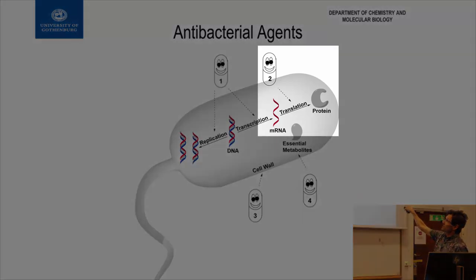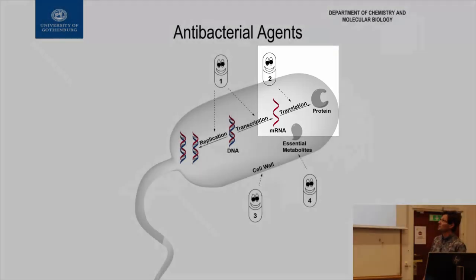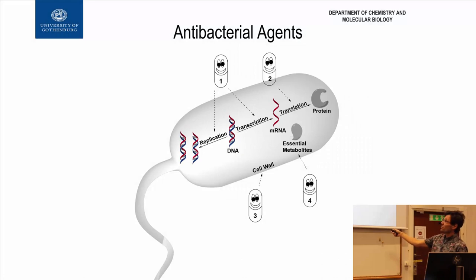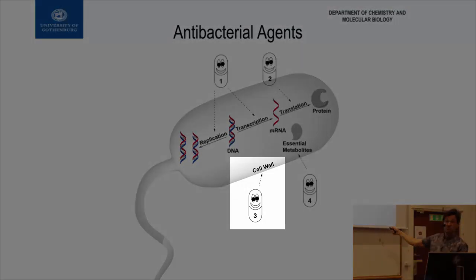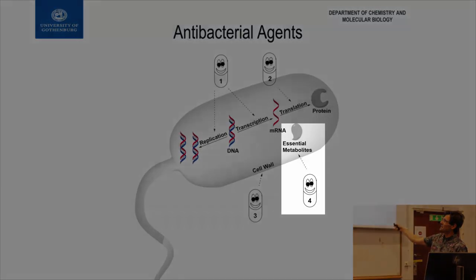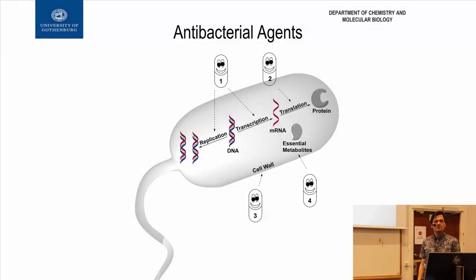Some drugs interfere with translation — how they convert mRNA to a protein. A third class does something with the cell wall in the bacteria. And the fourth class interferes with what we call essential metabolites. Take that message: there are four main mechanisms — that's how the majority of all antibiotics work.